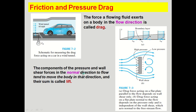The component of pressure and wall shear forces in the normal direction to the flow tends to move the body in that direction, and that resultant is called the lift force. When air flows over a car, whatever force is applied perpendicular to the direction of air flow is called the lift force. Now in a second diagram, the drag force acting on a flat plate parallel to the flow depends on the wall shear stress — friction occurs as flow passes over the plate, developing shear stress and thus a friction drag force.